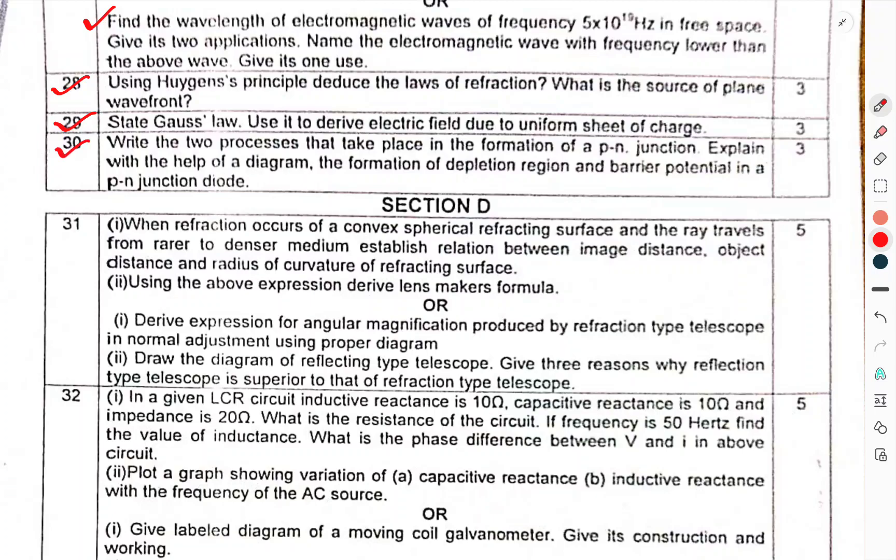Question 30: Write the two processes that take place in the formation of p-n junction. Explain with the help of diagram the formation of depletion region and the barrier potential in a p-n junction diode. Now we have come to section D.